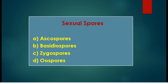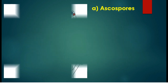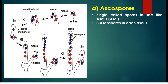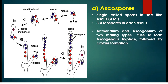The common sexual spores found in fungi include ascospores, basidiospores, zygospores and oospores. Ascospores are formed within sac-like structures called ascus; in each ascus eight single-celled ascospores can be seen. In ascospore formation the female structure is called ascogonium, and the antheridium and the ascogonium of two mating types form the ascogenous hyphae, which is the hyphae from which the ascus is formed.